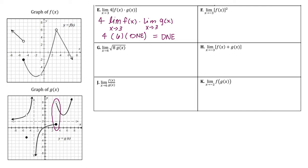For part F, we have the limit as x approaches negative 3 of F of x squared. Using the power rule, the limit as x approaches negative 3 of F of x is negative 6. And negative 6 all squared is 36.